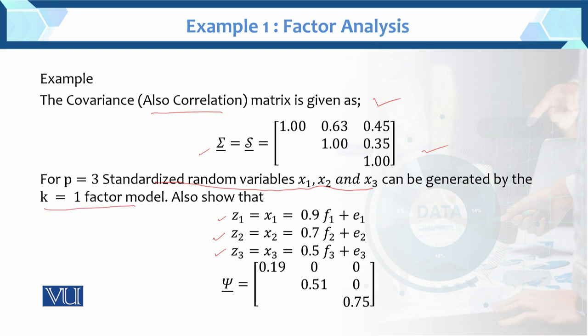We have a numerical example and we will solve it manually. In manually, we can easily solve the one-factor solution. For the k equals to 1 factor model, we have to show the covariance matrix and find these factors.